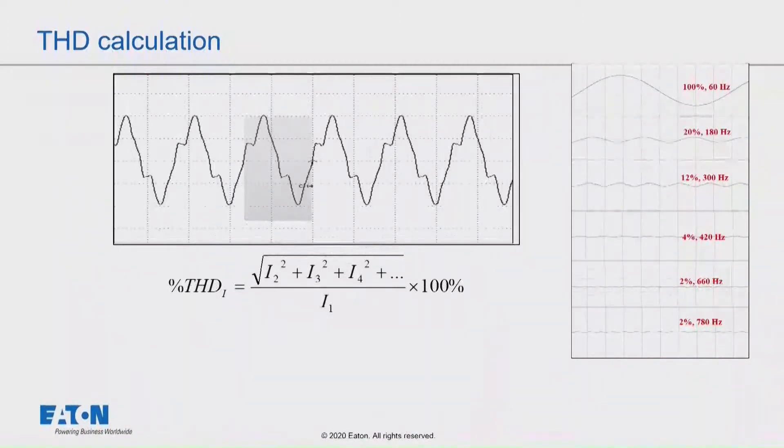This is what we would end up with. So you can see a fundamental part, a 60 hertz, and you can see a third harmonic, a fifth harmonic, a seventh harmonic, an eleventh harmonic, a thirteenth harmonic. Those are typical harmonics that we might see on a power system.